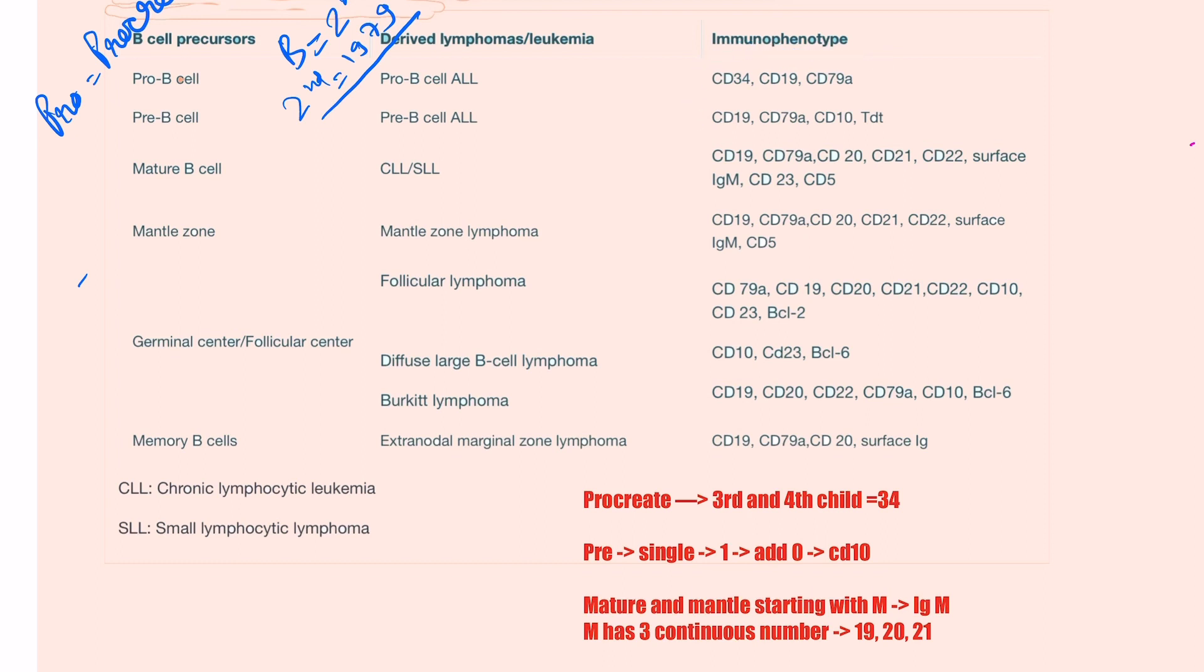So we can remember all the written thing for the Pro B cell. Now we move on to the Pre B cell. Again, B is coming in the name, so just put 1979. Since it is pre, when you are single, when you are unmarried, then you have one. Add zero to it, so it will become 10. When you are single, you are looking for the job, wearing tie. Tie denotes the TdT.